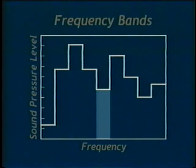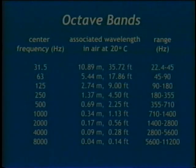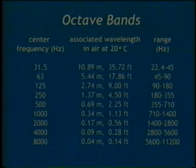When the sound is complex, it can be called broad band because it encompasses many frequency bands. For octave band analysis, the entire frequency spectrum is divided into one octave bands. The center frequency of each band is one octave higher than the previous band. For the frequency of 31.5 hertz, the wavelength in air is 10.89 meters or 35.72 feet. And for the frequency of 8,000 hertz, the wavelength is 0.04 meters or 0.14 feet.